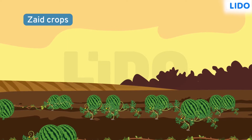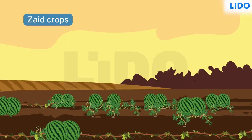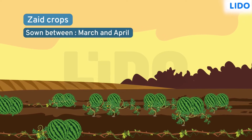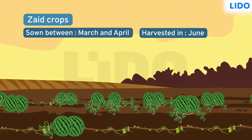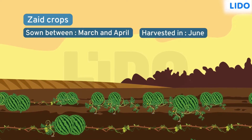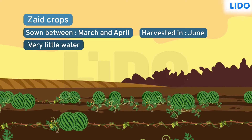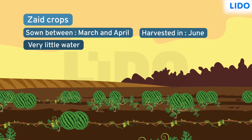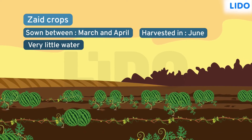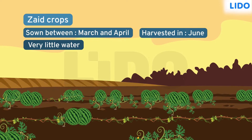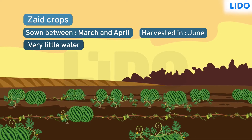Zaid crops are summer crops. These crops are sown during the months of March and April and harvested in June. These crops require very little water to grow and hence they grow well during summer months. Examples of crops grown during this season are watermelon and cucumber.